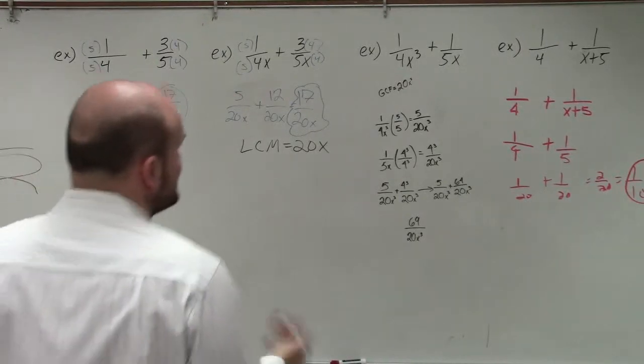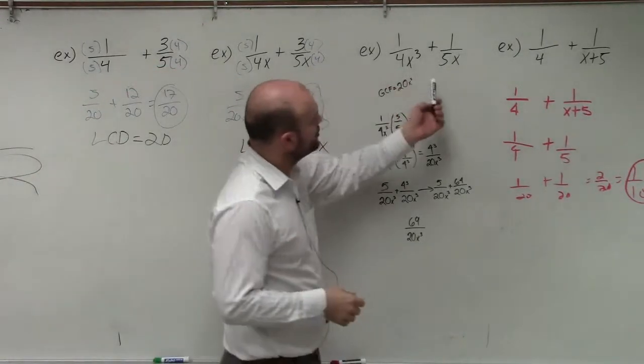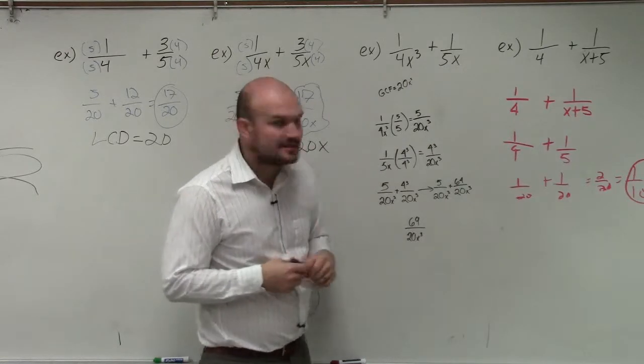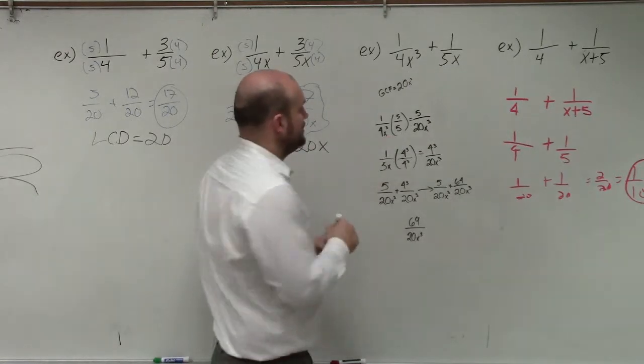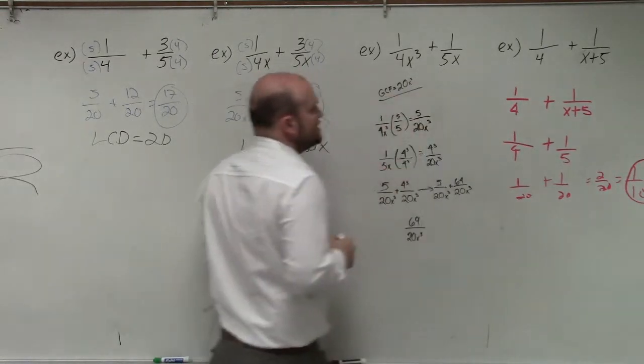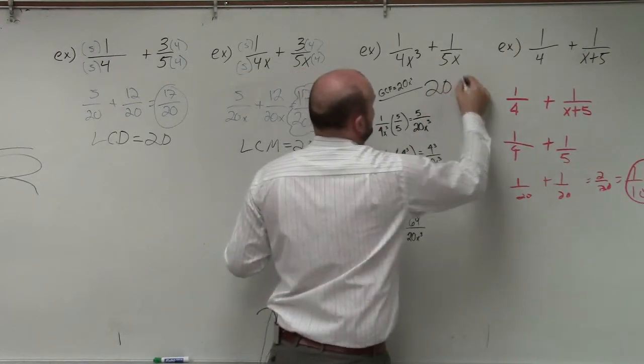They just broke it down. So in this example, I have 1 over 4x cubed plus 1 over 5x. And what they determined - I really like how they showed their work - they said the GCF is 20x cubed.